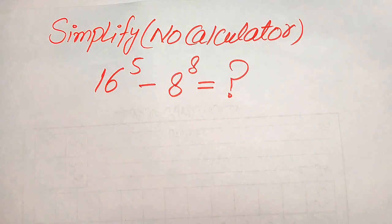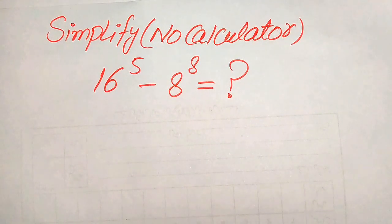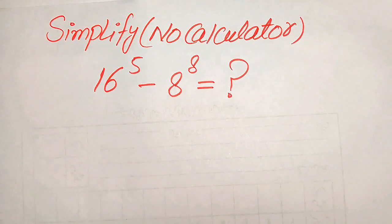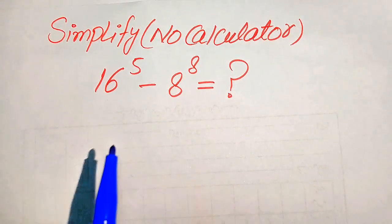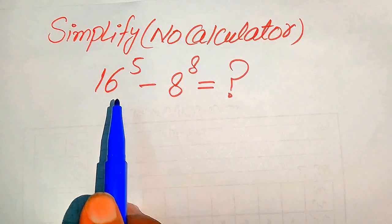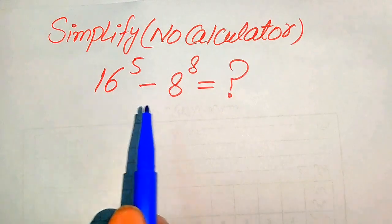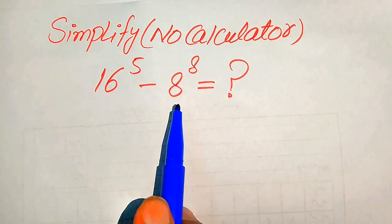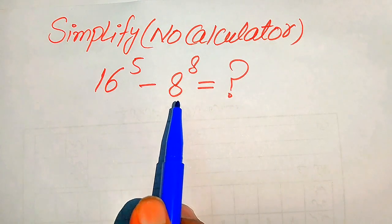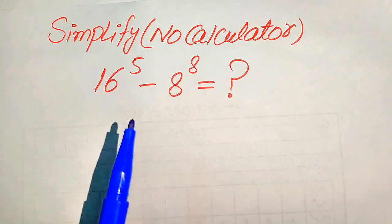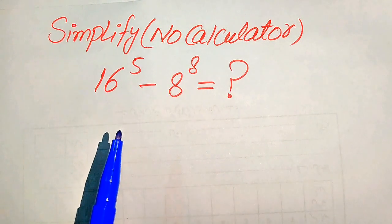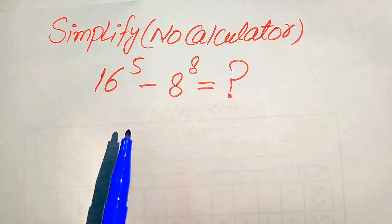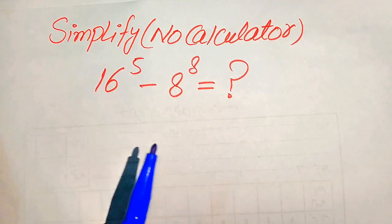Hello everyone. How to simplify this nice algebraic expression if we have 16 to the power of 5 minus 8 to the power of 8. We write this algebraic expression into the lowest form.